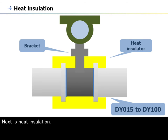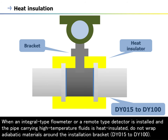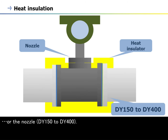Next is heat insulation. When an integral type flow meter or a remote type detector is installed and the pipe carrying high temperature fluids is heat insulated, do not wrap adiabatic materials around the installation bracket, DY-15 to DY-100, or the nozzle, DY-150 to DY-400.